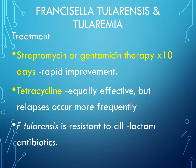Just like Yersinia, Francisella tularensis is treated with streptomycin or gentamicin given for 10 days, and rapid improvement is noted. Tetracycline is also a good alternative but relapses may occur. Importantly, Francisella tularensis is resistant to beta-lactam antibiotics, so penicillins and cephalosporins cannot be used.